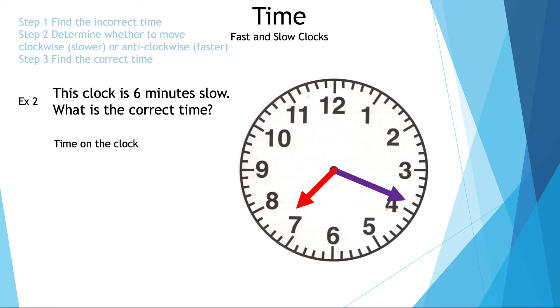Now we have example two. This clock is six minutes slow — what is the correct time? We need to find the time on the clock, which is the incorrect time, and that is 7:19.